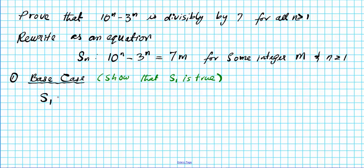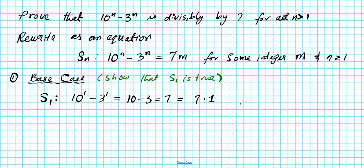S sub 1 is what you get when you substitute 1 for the variables in this expression. So it's going to be 10 to the first power minus 3 to the first power, which is 10 minus 3. 10 minus 3 is 7. Can 7 be written as an integer multiple of 7? Absolutely. 7 can be written as 7 times 1. So since I can write S1 as 7 times some integer, namely 1, that automatically means that S1 is divisible by 7. Our base case checks out — we have a solid foundation.